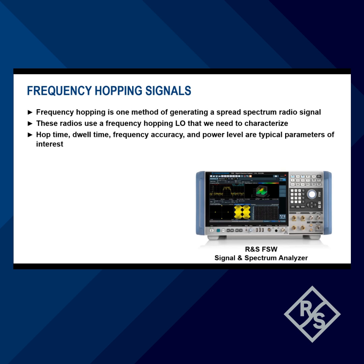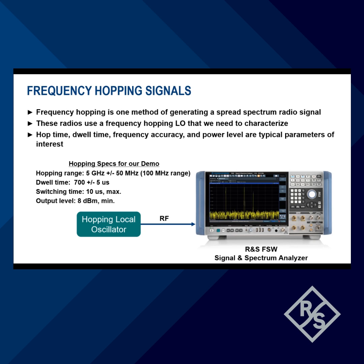One method of generating a spread spectrum radio signal is to use a fast hopping LO. Common parameters of interest for these signals are hop time, dwell time, frequency accuracy, and power level. Our hopping signal will be centered at 5 GHz with pseudorandom hops over a 100 MHz range with 5 MHz steps. The expected dwell time is 700 microseconds. This signal has one hop that's not as expected — let's see if we can find it.